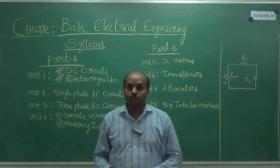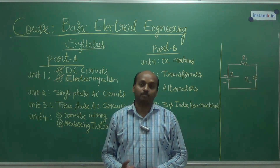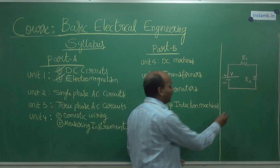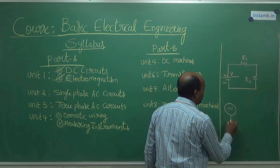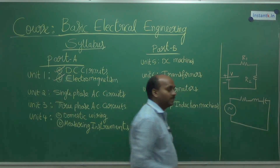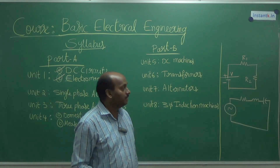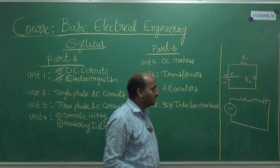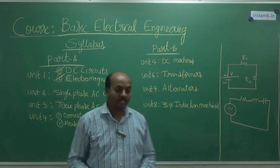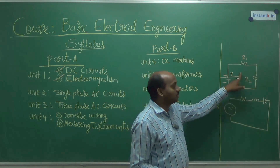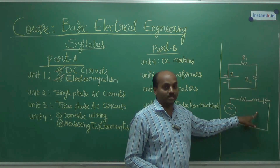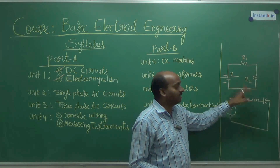Unit 2 discusses AC supply. Instead of DC supply, we are going to have single phase AC supply. We may have an AC source connected to resistance, inductance, and capacitance — the 3 passive elements R, L, and C. We never discuss inductor and capacitor in DC circuits because when you connect them to a DC source, it goes to steady state — either open state or short circuit state. So we do not discuss inductor and capacitor in DC circuits.